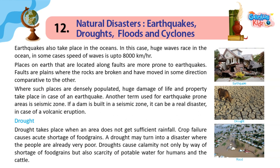Earthquakes also take place in the oceans. In this case, huge waves rise in the ocean; in some cases the speed of waves is up to 8,000 km per hour. Places on earth located along faults are more prone to earthquakes. Faults are planes where the rocks are broken and have moved in some direction relative to the other. Where such places are densely populated, huge damage to life and property takes place in case of an earthquake. Another term used for earthquake-prone areas is seismic zone. If a dam is built in a seismic zone, it can be a real disaster in case of a volcanic eruption.